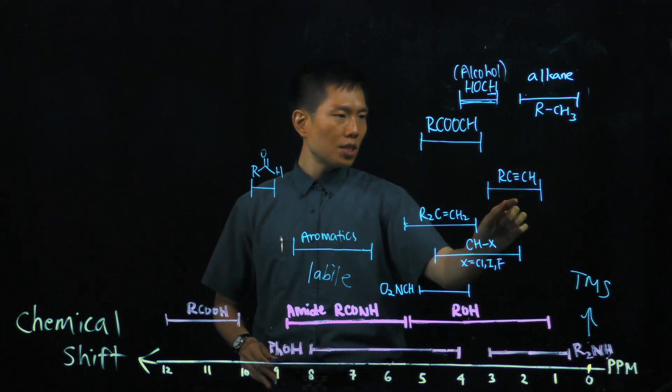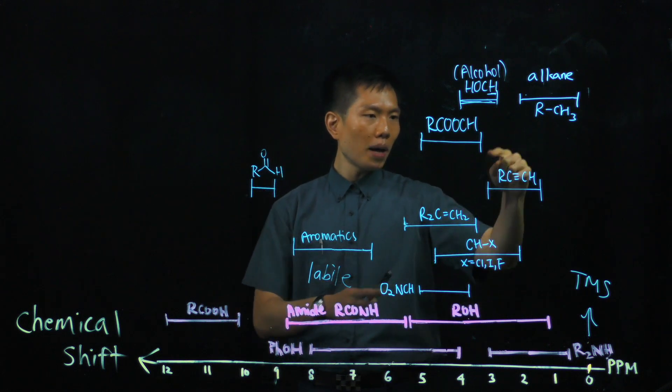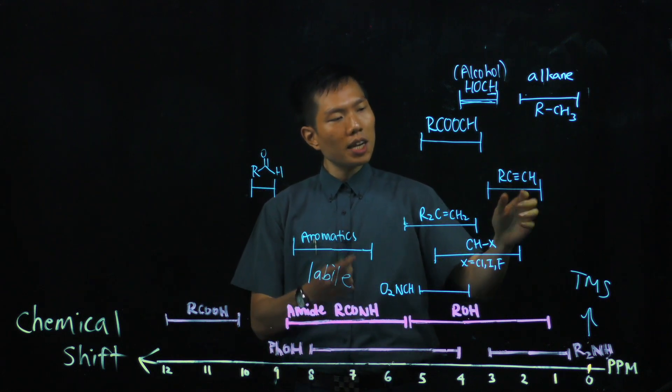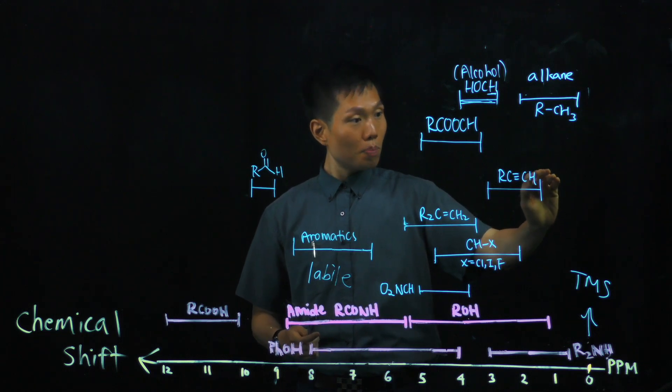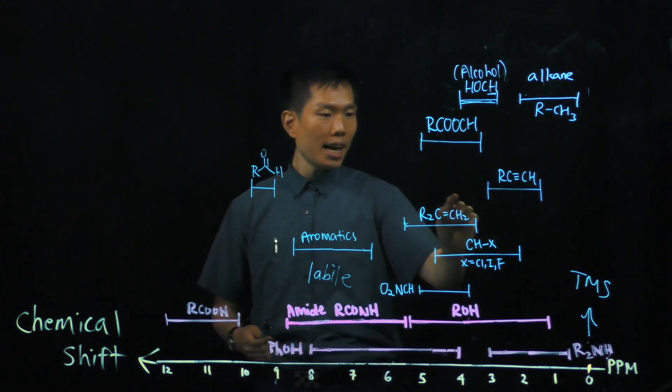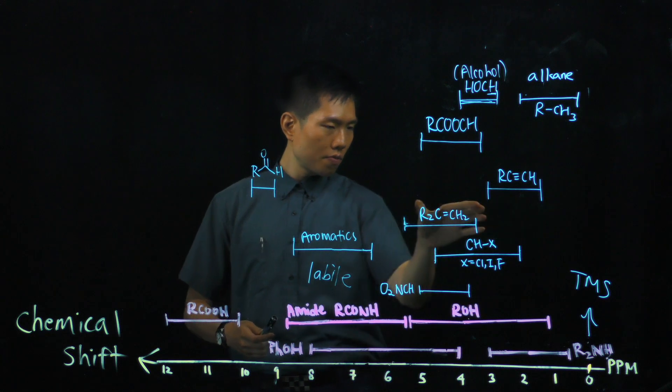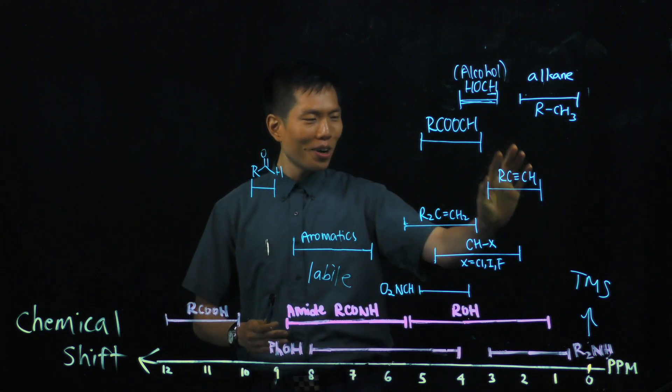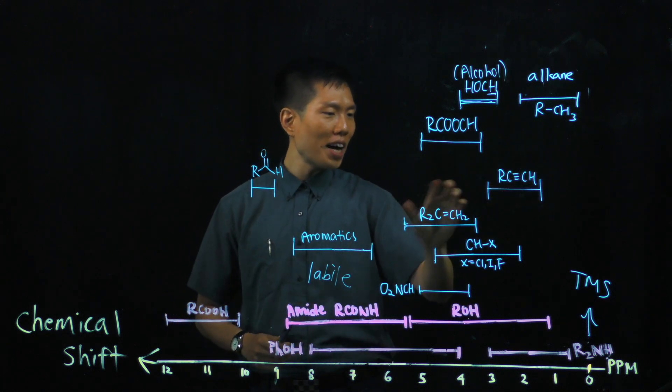Then moving on, this is the alkyne. Alkyne, you have the pi electron cloud, the currents moving around. And just so nice that the proton here is a bit shielded compared to the one in the alkene. So you see there's a shift. And once again, you don't have to memorize it, but it's good to know where to find these kind of protons.